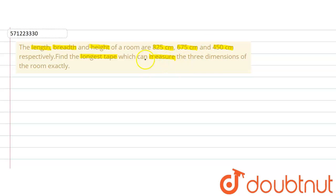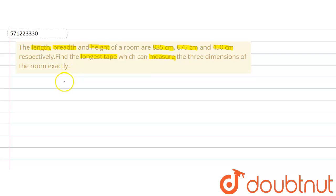So we are required to find out the length of the longest tape which can measure the three dimensions of the room exactly. The tape will have a length less than these three dimensions, so in this question we are going to find the length of the tape by finding out the HCF of the three numbers.